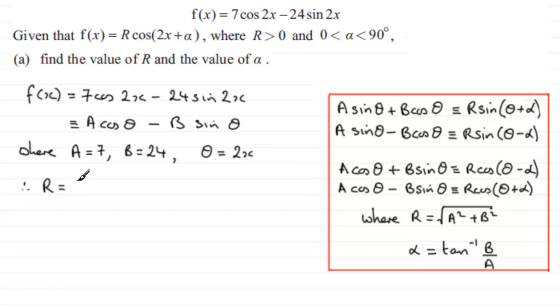So on that basis, we now know that therefore R is going to be equal to the square root of a squared plus b squared, as we've got here. So that's 7 squared plus 24 squared. If you work that out, that ends up being the square root of 625, which is 25. We don't do plus or minus with questions like this; we always just take the positive value.